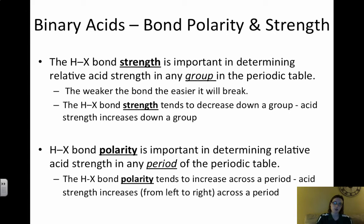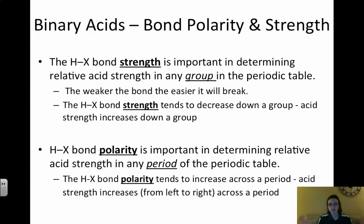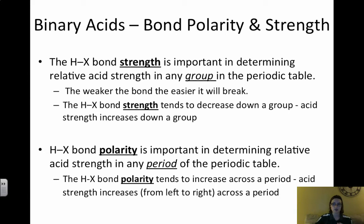The HX bond polarity is important when we look across a period on the periodic table. Bond polarity tends to increase across a period because electronegativity increases. The more polar the bond, the more electrons are attracted to one side of the molecule, and the easier it is for that hydrogen to come off. The more it dissociates, the stronger the acid.